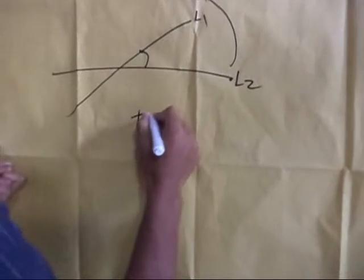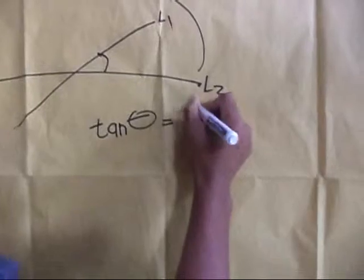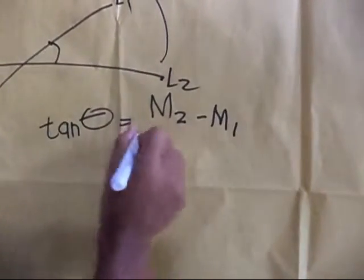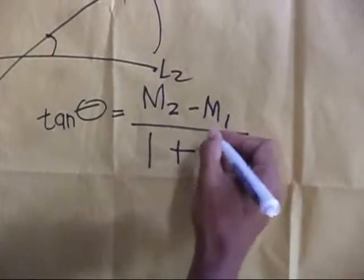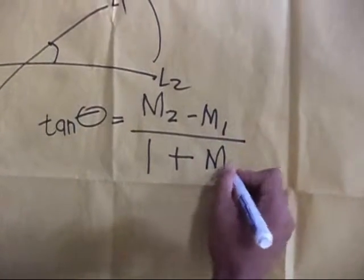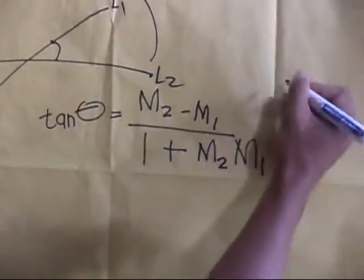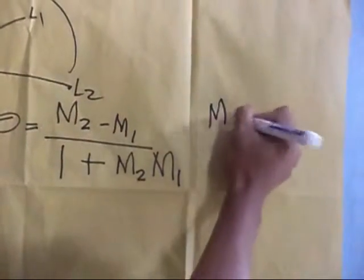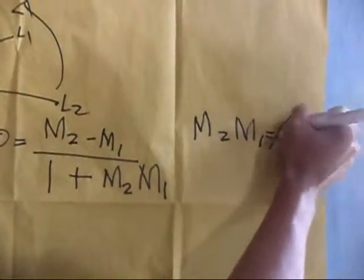Then tangent theta equals M2 minus M1, all over 1 plus M2 times M1. Remember, the product of M2 and M1 is not equal to negative 1.